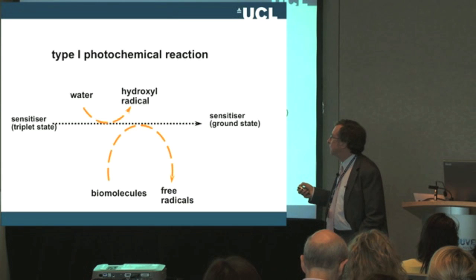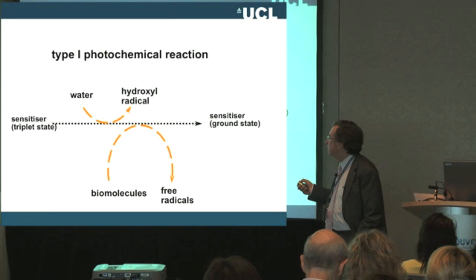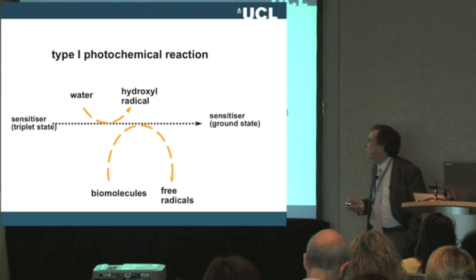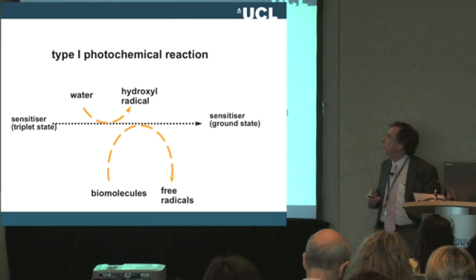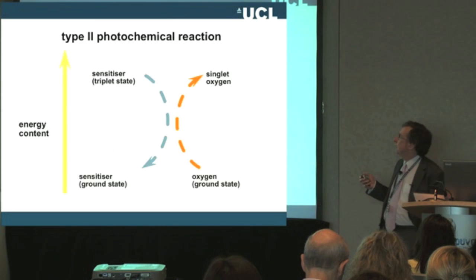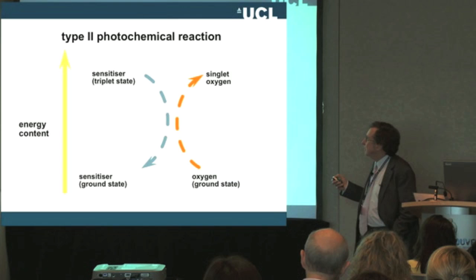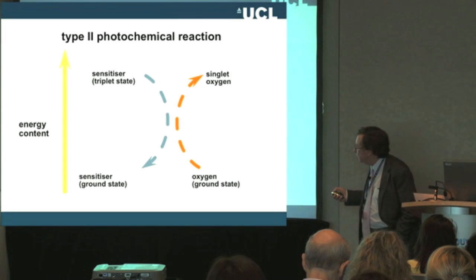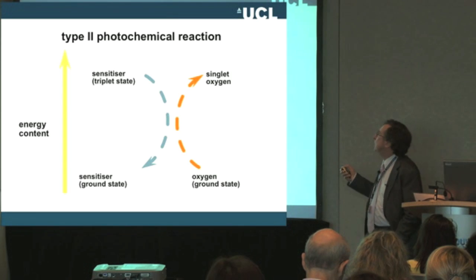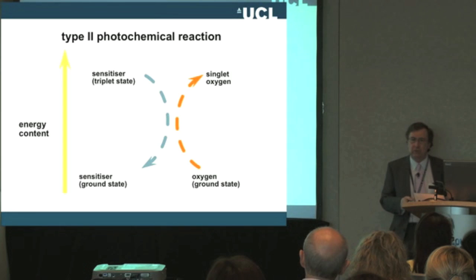A type 1 photochemical reaction is when the sensitizer in the triplet state reacts with water to form a hydroxyl radical, or with biomolecules giving free radicals. A type 2 photochemical reaction is where the sensitizer in its triplet state reacts with oxygen in the ground state to form the very reactive species singlet oxygen.